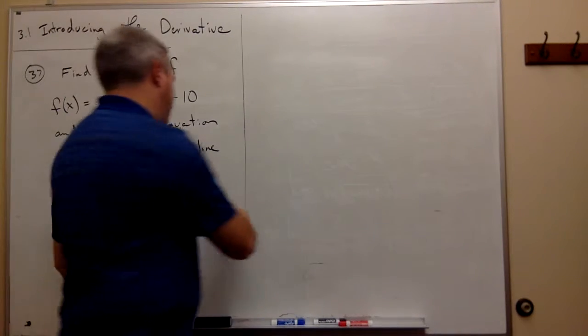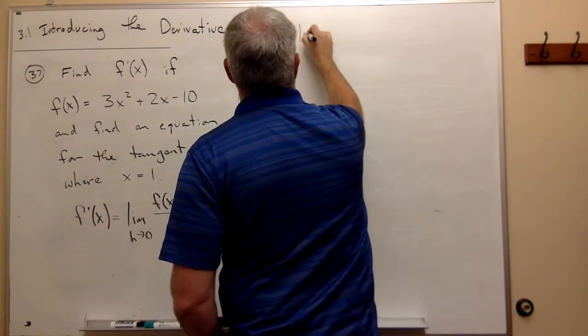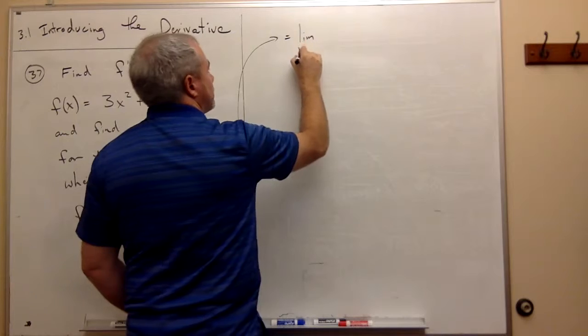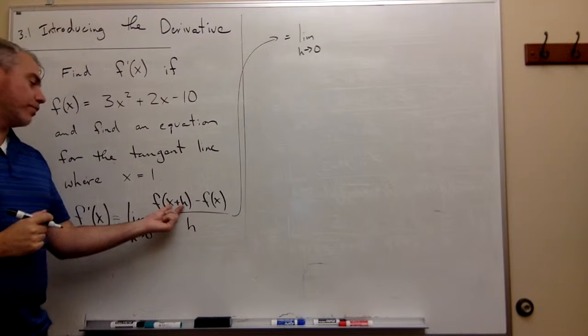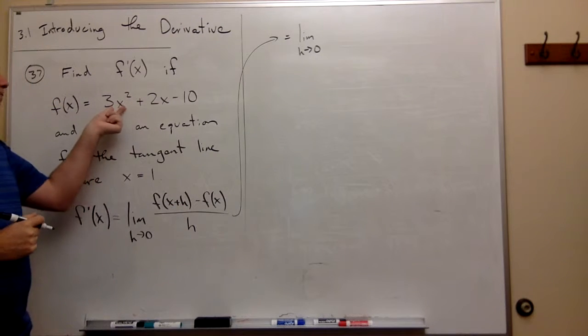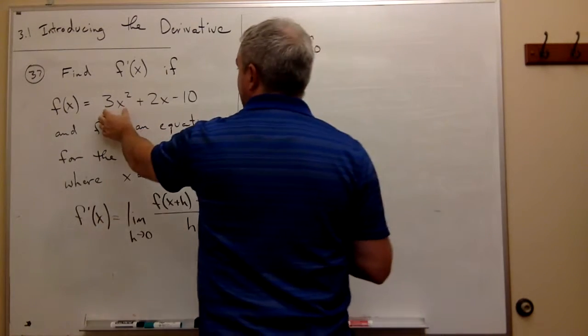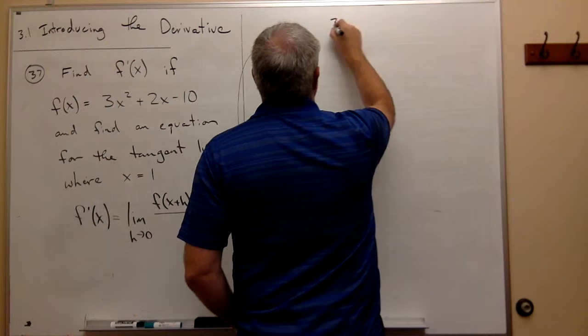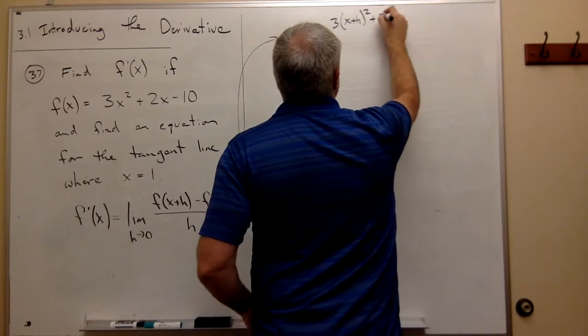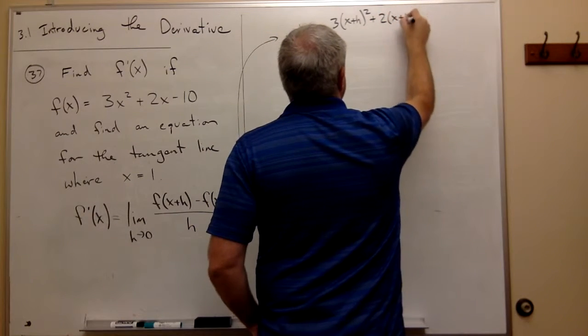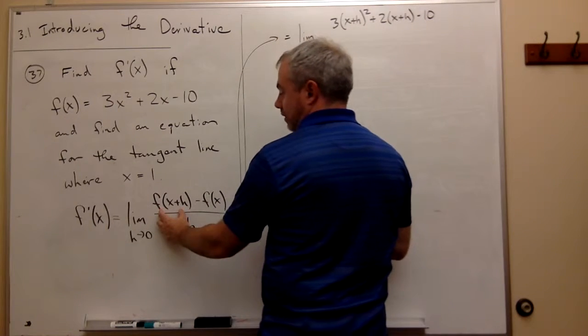Let's fill in what we can here. This equals the limit as h goes to 0 of f(x+h). We want to take x+h and plug it in everywhere we have an x in our function. If I do, I get 3(x+h)² + 2(x+h) - 10. That's f(x+h).